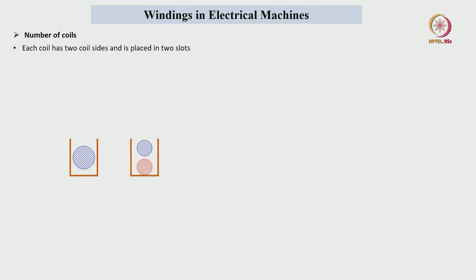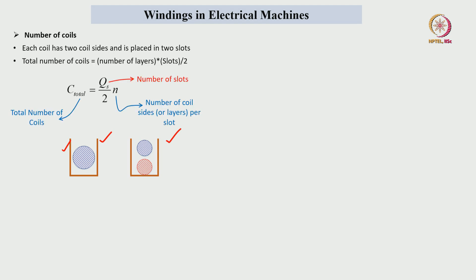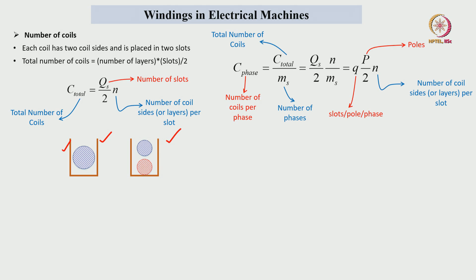The number of coils depends upon the number of slots inside the stator core and how many coil sides are in each slot. If one coil side is in the slot it is single layer; if two coil sides, it is double layer. The total number of coils is calculated as Qs divided by 2, multiplied by the number of coil sides or layers per slot. The number of coils per phase, C_phase, is the total coils divided by the number of phases M. This gives the final expression in terms of slots per pole per phase Q, number of pole pairs P/2, and number of layers N.